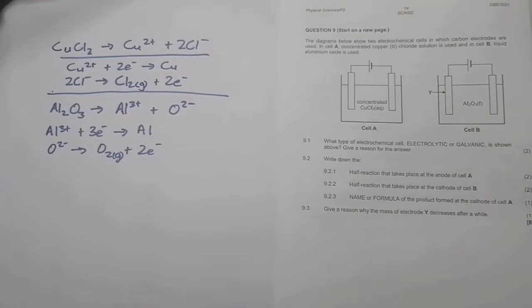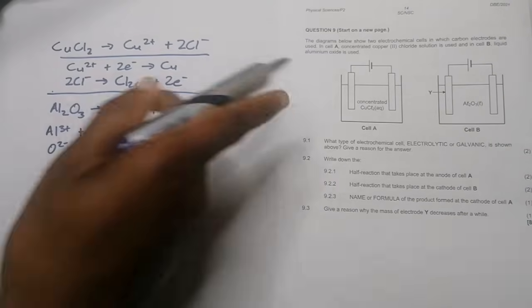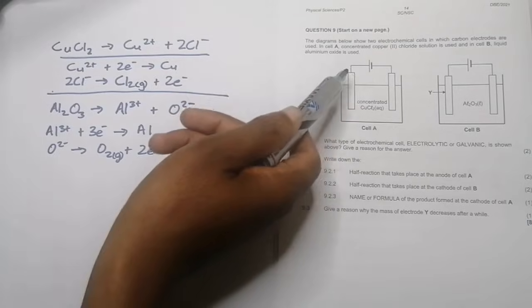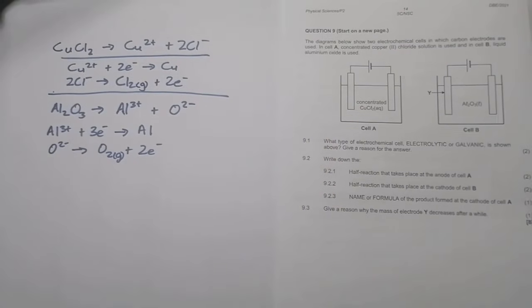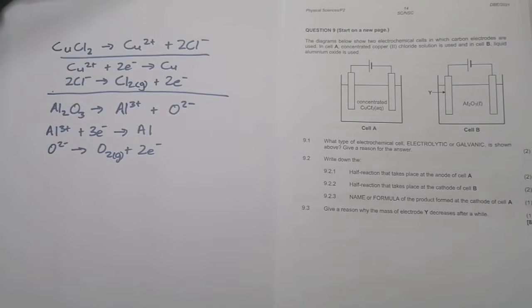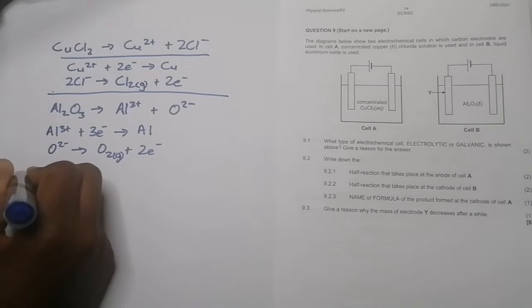Now let's quickly answer the question. They say what type of electrochemical cell, electrolytic or galvanic, is shown above, and give a reason for your answer. So in this case we know it's the electrolytic cell. And what's the reason for that? We are converting electrical energy into chemical energy. That's the reaction that's taking place.